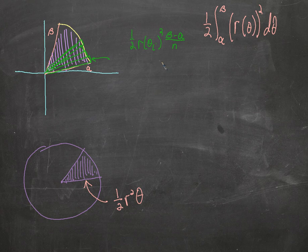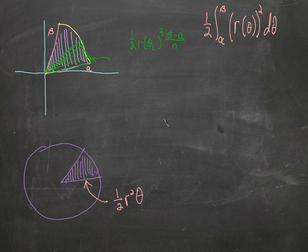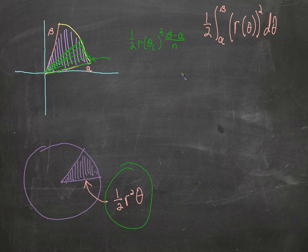This should look pretty familiar when we talk about rectangular functions and we cut them into tiny, tiny rectangles. We get something very similar to this. We get the right side and the left side over n and then something that defines the height. But in this case, we're finding areas of sectors. So we're going to use the formula for the area of a sector rather than a rectangle. And we have 1 half, r squared, theta.